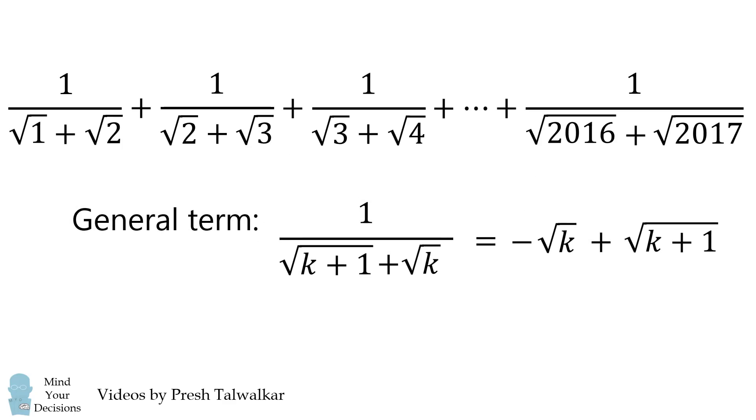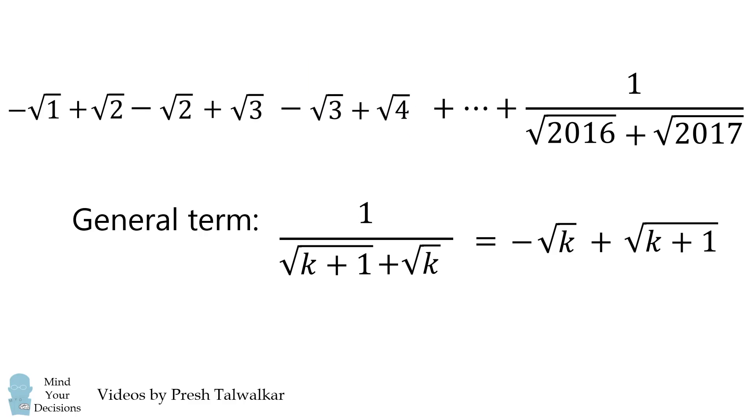Now let's take a look at our series and we'll substitute in. For the first term we're going to end up with negative square root of 1 plus the square root of 2. The next term will be negative square root of 2 plus the square root of 3. This pattern will continue and we keep substituting.